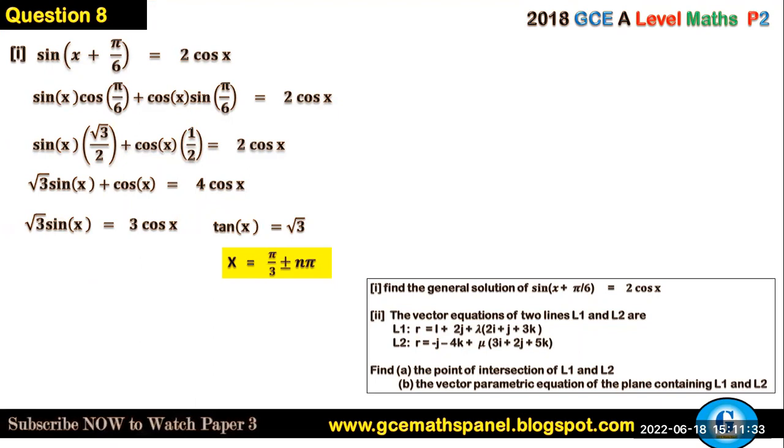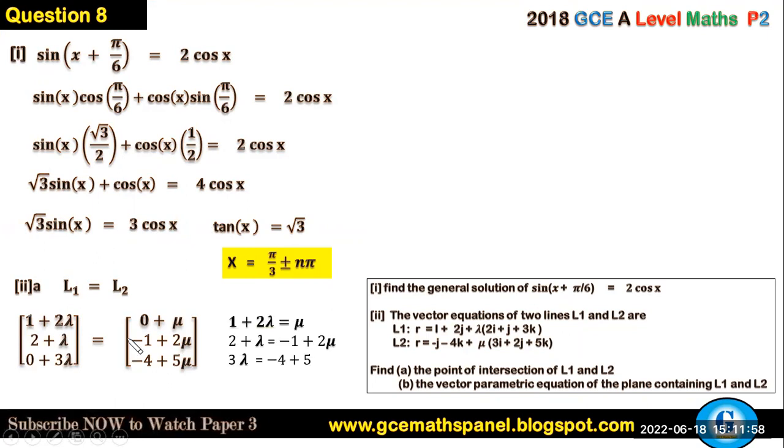So for the point of intersection, guys, we just have to equate line one to line two. I'm using the column vector form. So we'll have (1 + 2λ, 2 + λ, 0 + 3λ) equal to (0 + μ, -1 + 2μ, -4 + 5μ) for line one and line two. We come out of these equations, and when we solve for μ and λ, we will have 5 and 7 respectively.